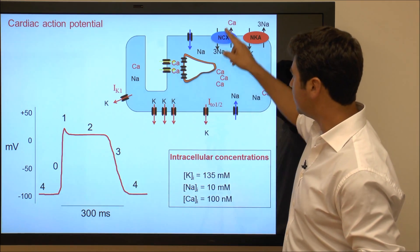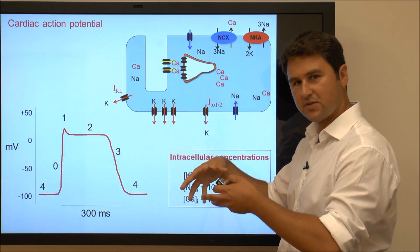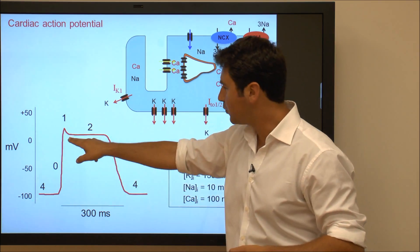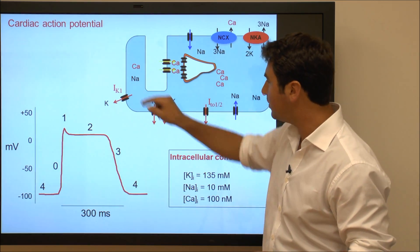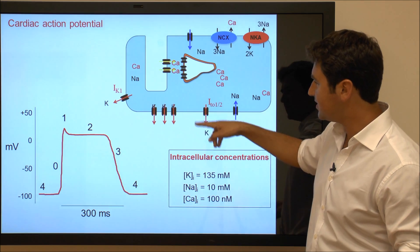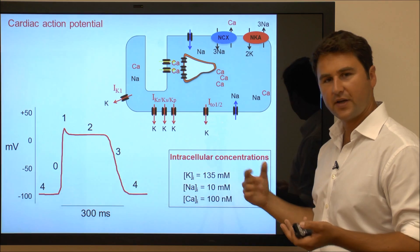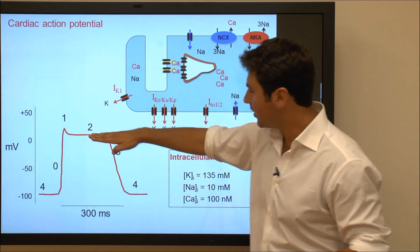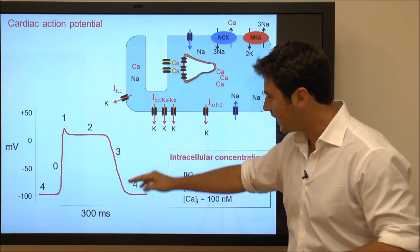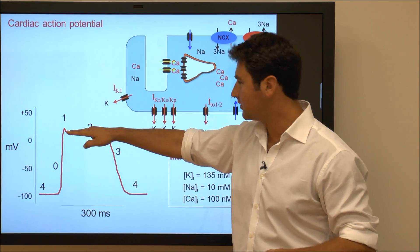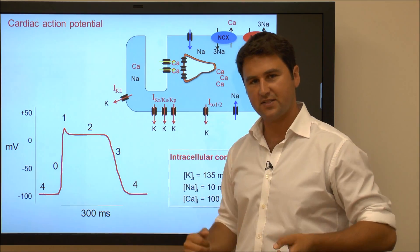So L-type calcium channels being open and sodium-calcium exchanger being active are bringing positive charges into the cell, which means that your action potential wants to go up. But some of the potassium channels are actually open at the same time, in particular IKR, IKS, and IKP, which are keeping the membrane potential wanting to go down. So the net result is a fairly flat slope as a consequence of the two offsetting each other.